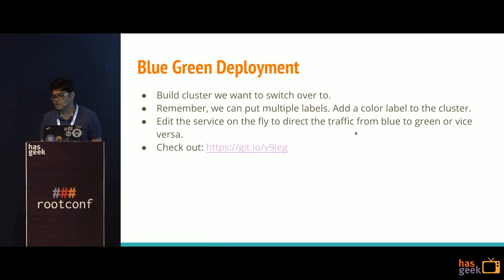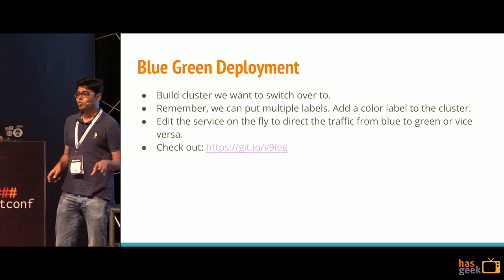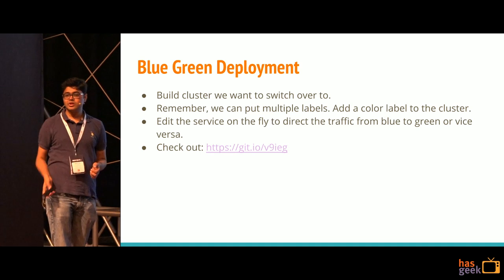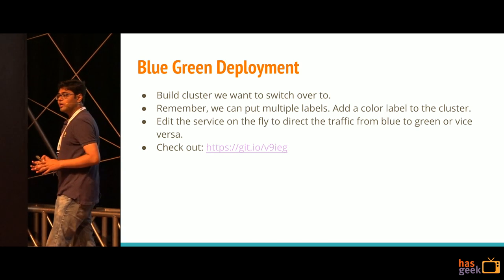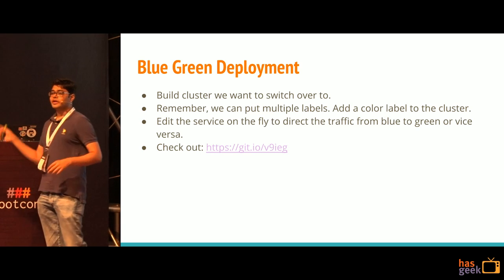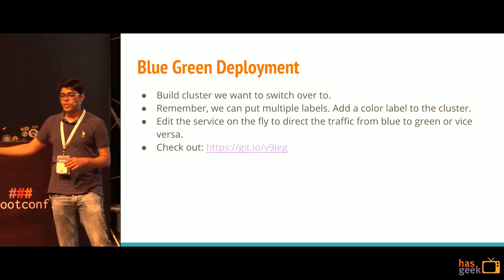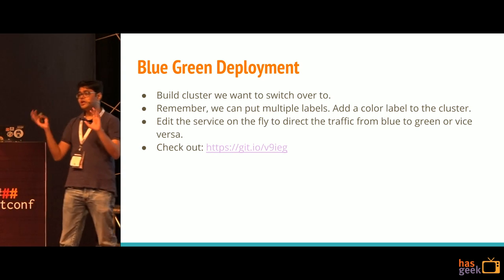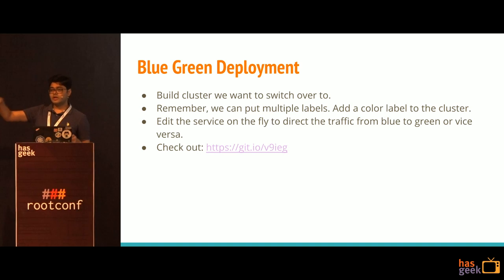Lastly, I want to talk about blue-green deployment. This is a different case that doesn't fall into rolling. What you do in blue-green is maintain two separate clusters — one is blue, one is green, which is why I used the color labels. Your traffic goes to blue, but when you want to update, you set up a new cluster called green, and when your tests are done on green, you route your entire traffic to green. This is also helpful if you are into immutable architectures where you don't want to change what has been done once — you create a new cluster, do your tests, and just route the traffic.